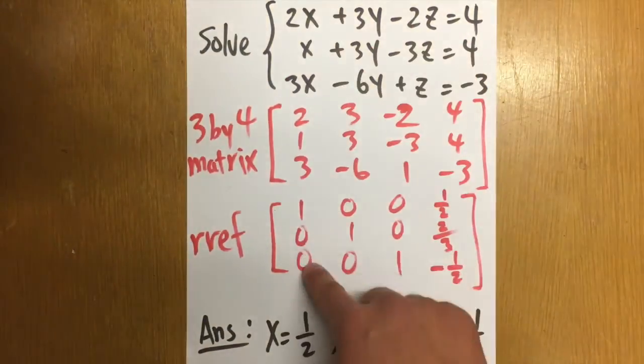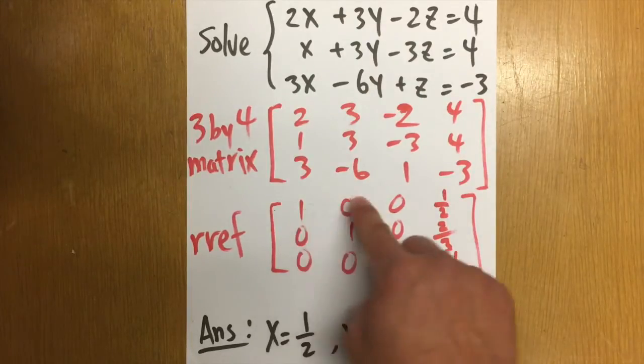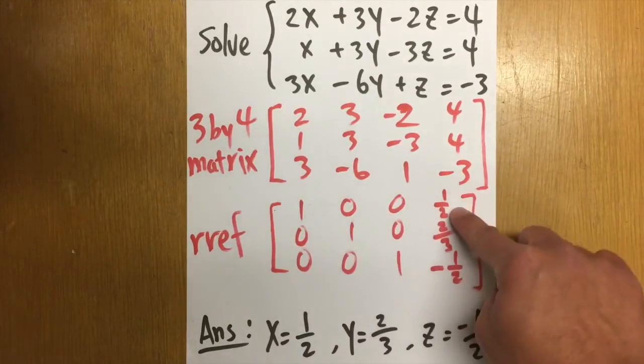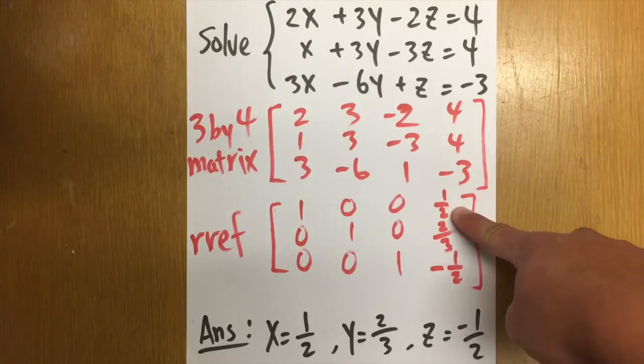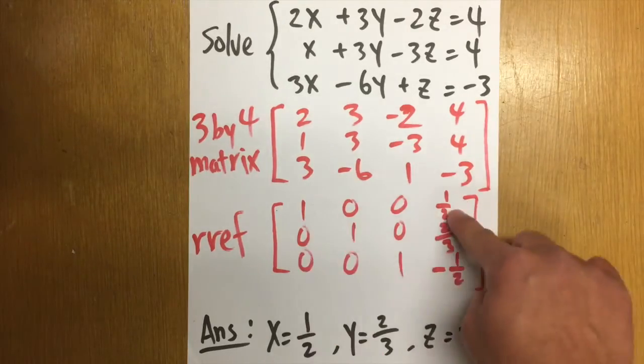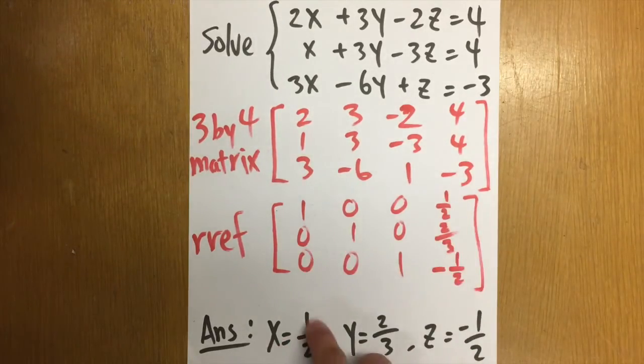And this is how we are going to read the answer. This is the X column. We have 1 X, no Y, no Z, and this right here is 1 half. That means 1 X is equal to 1 half, so X is equal to 1 half.